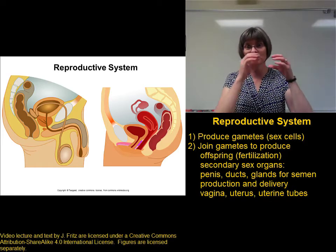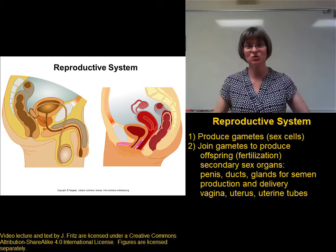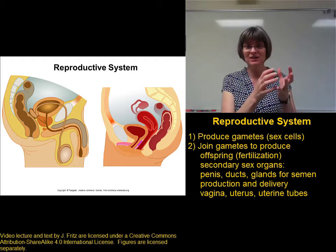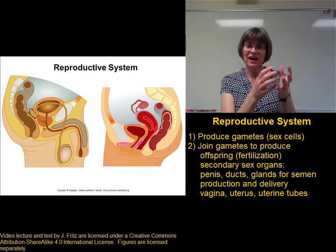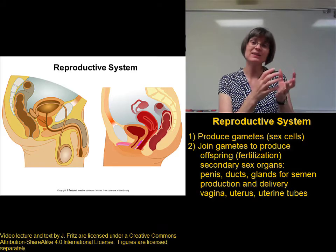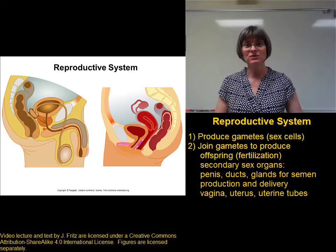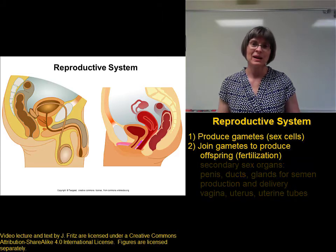Fertilization actually occurs in the uterine tubes — that's where the sperm meets the egg and they join together. From there, the zygote, the fertilized egg, begins to travel down into the uterus where it will implant.